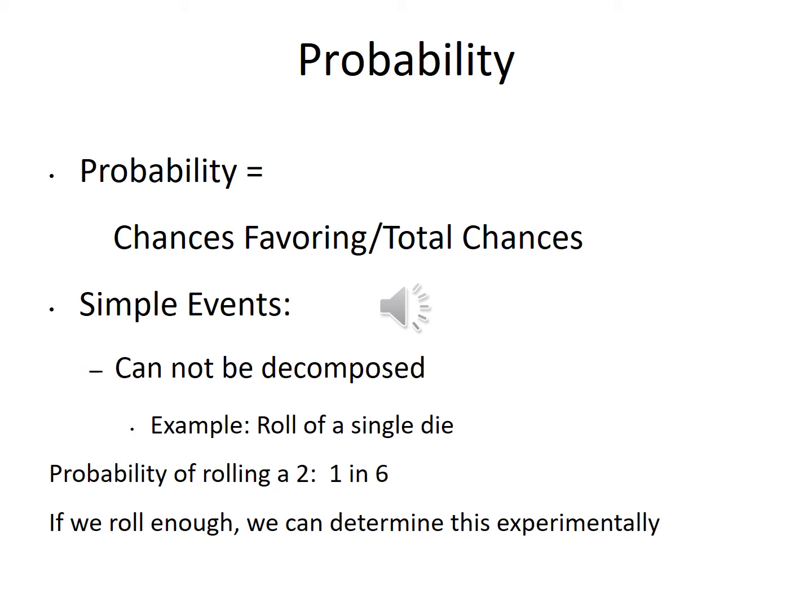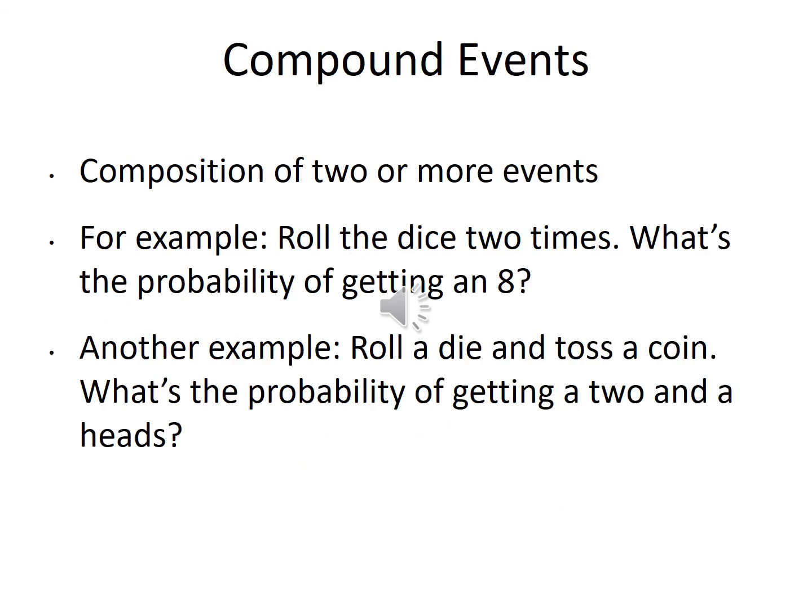All probability is chances favoring divided by total chances. A simple event is one that can't be broken down further — like a roll of a single die, where the probability of rolling a two is one in six. We can also have compound events — the composition of two or more events. For example, rolling a die twice: what's the probability of getting a sum of eight? Or rolling a die and tossing a coin: what's the probability of getting a two and heads?